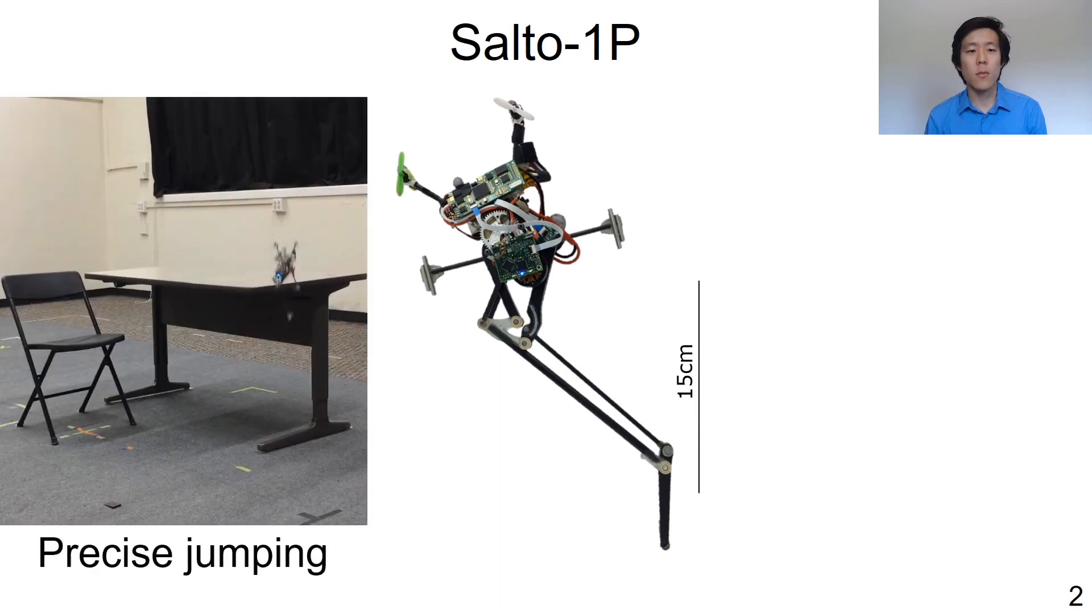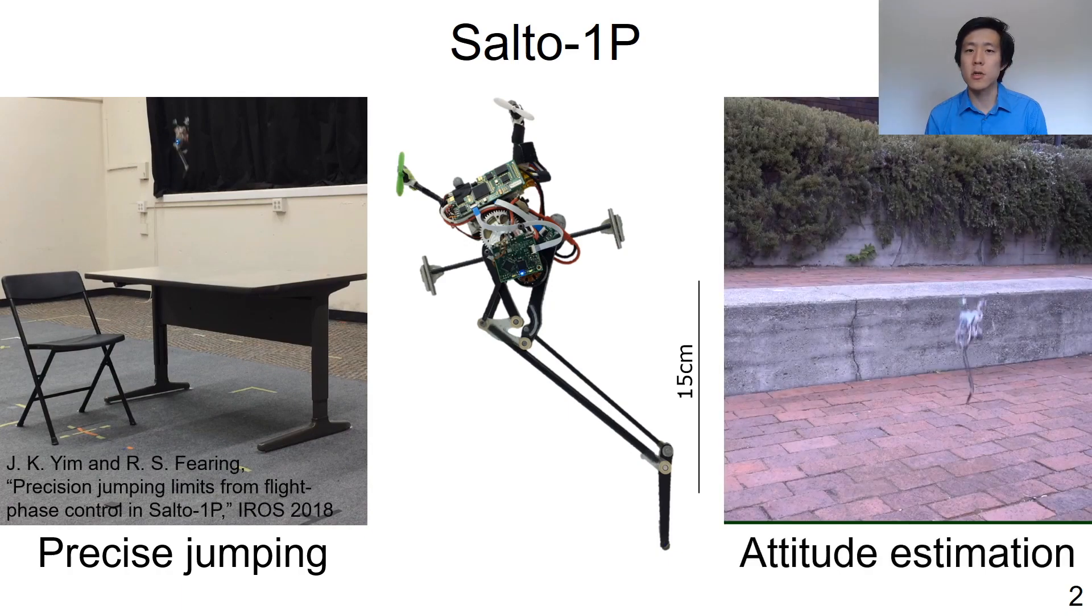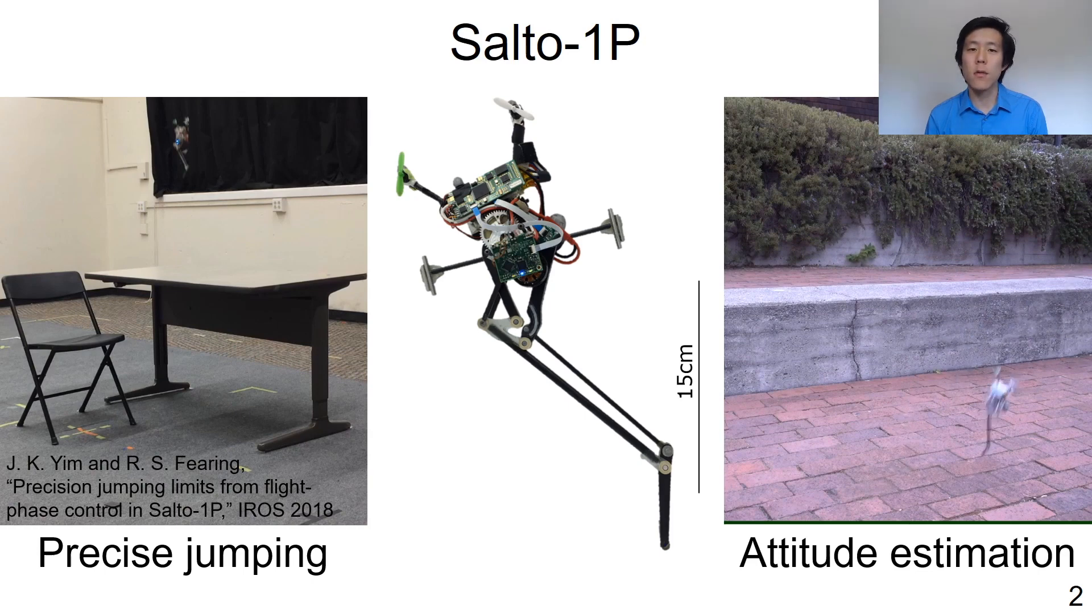In previous work, we demonstrated precise jumping control that enables the robot to scale obstacles higher than its full body length without missing a step. We also developed onboard estimation that measures angle and velocity in order to enable the robot to run outdoors and fully autonomously.